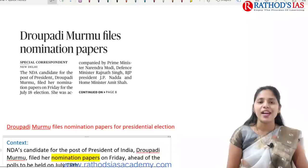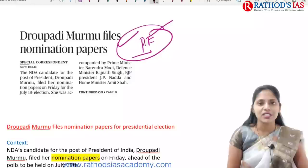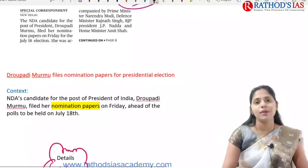Now the next topic is regarding Draupadi Murmu filing nomination papers. This article talks about presidential elections — we are going to have presidential polls on July 18th. From the NDA, one candidate was nominated — that is Draupadi Murmu, who belongs to the Santal community from Odisha.